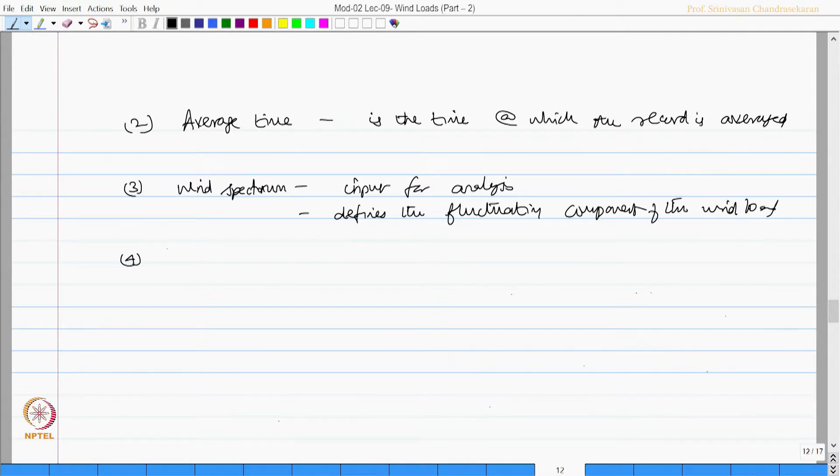The fourth one could be something called cross spectrum. Cross spectrum is actually to indicate the spatial dependence of wind velocity along height, along x and along y. It becomes a three dimensional variation, it is difficult to handle. This is compromised in analysis by using aerodynamic admittance function.